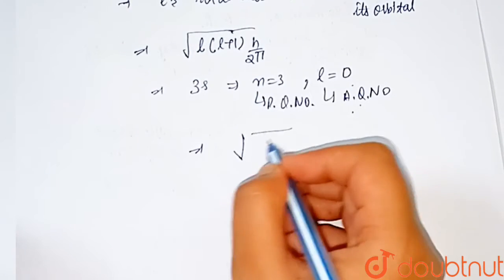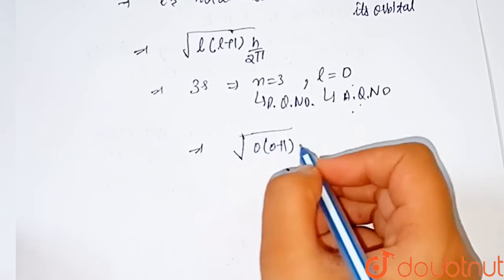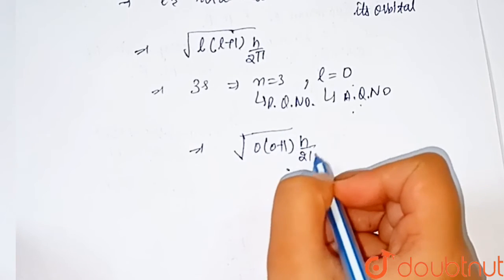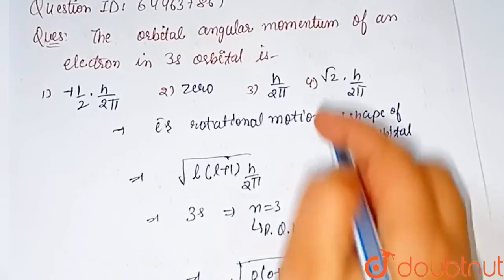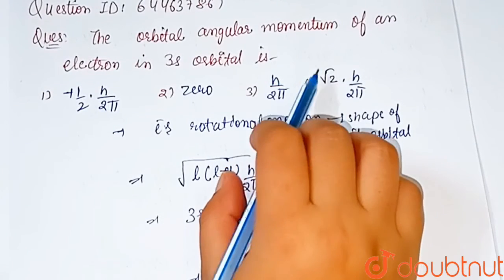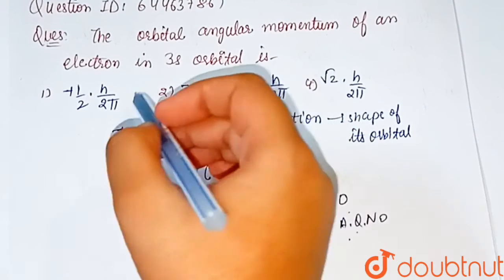Substitute the value of l in this equation, which is 0 × (0 + 1) × h/(2π), which on solving equals 0. So the orbital angular momentum of an electron in 3s orbital is 0. Option 2 is the correct answer of this question.